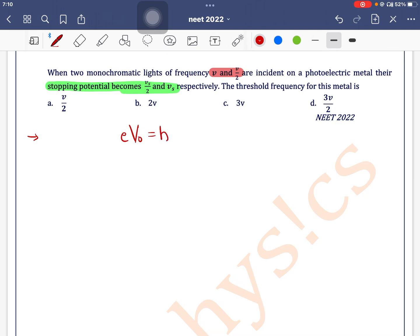is written as eV0 equals h nu minus h nu0, where V0 is the stopping potential, nu is the frequency of incident light, and nu0 is the threshold frequency.